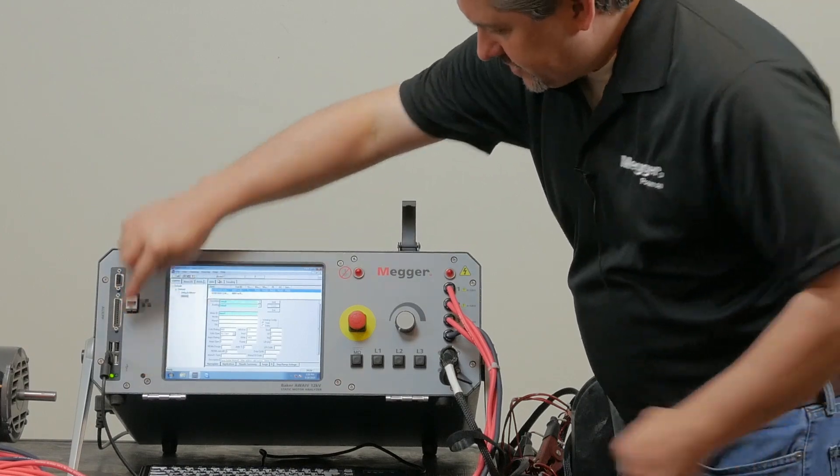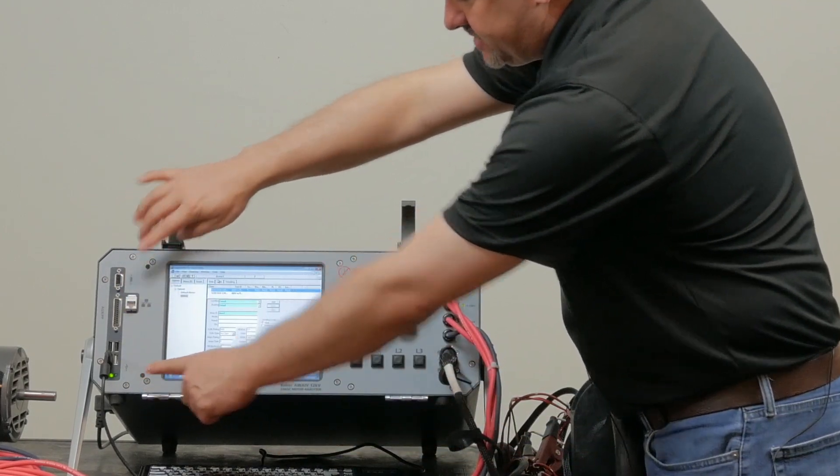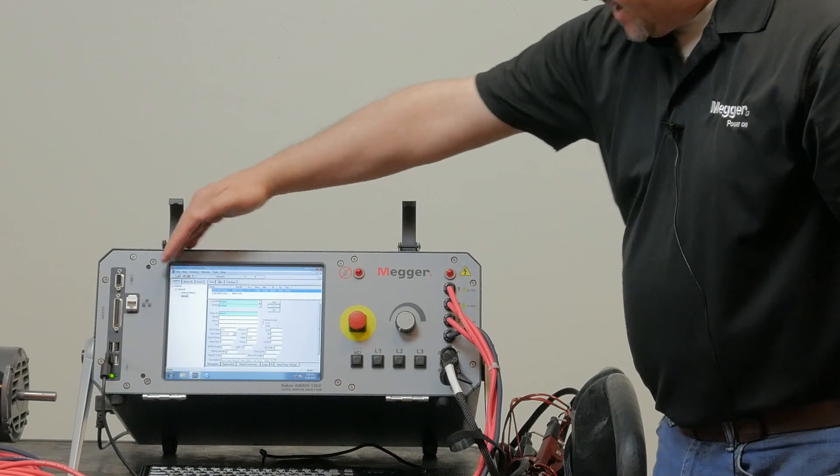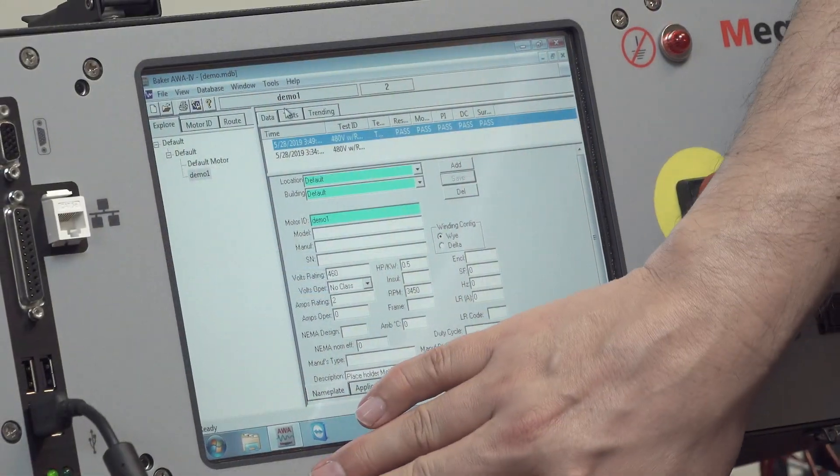We have two recess buttons here, which are basically the computer reset buttons. Then we have the display touch screen interface.